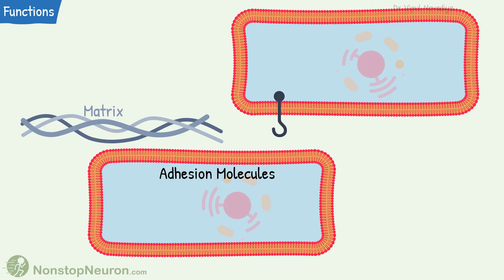The second function is as adhesion molecules. Some proteins form physical contact with the surrounding extracellular matrix or with neighboring cells. For example, integrins attach the cell to the extracellular matrix, and cadherins make cell-to-cell contacts.